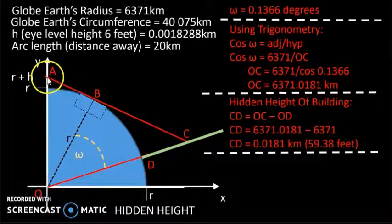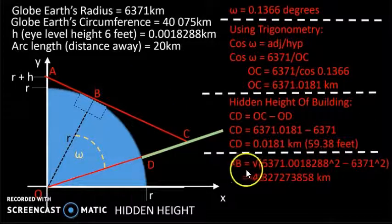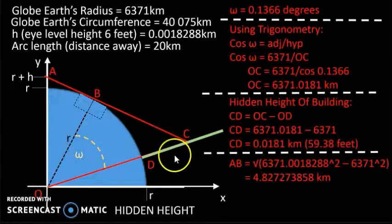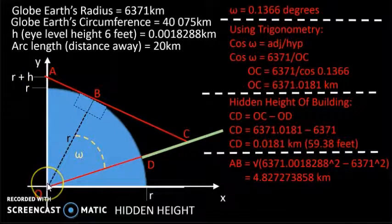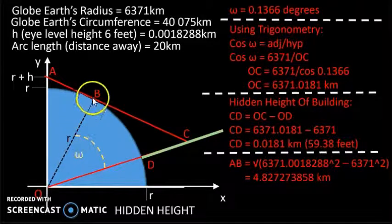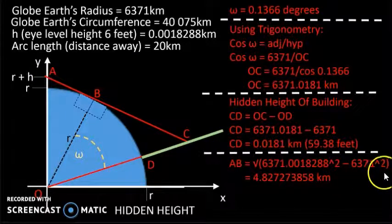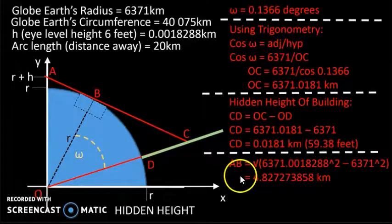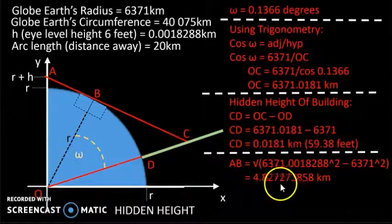We can also calculate this length here, AB. AB is calculated using Pythagoras. So we square this length and square this length, and subtract this squared from this squared, and then we square root the whole thing. So we get AB is equal to 4.827 kilometres.